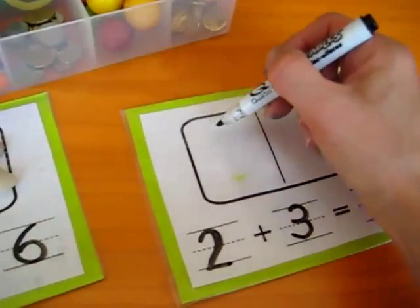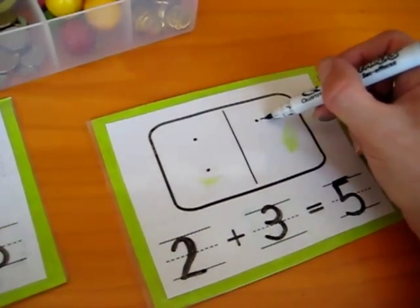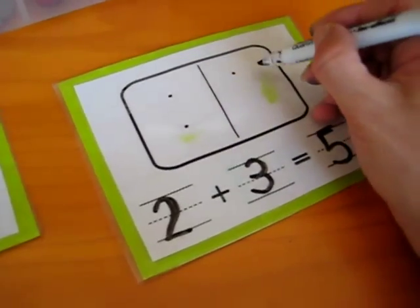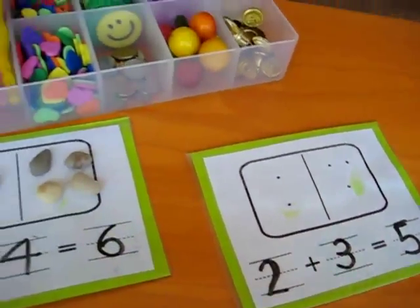And if they need help for counting, I just put little dot, 2 plus 3, 1, 2, 3. And then they count it all together and find the answer.